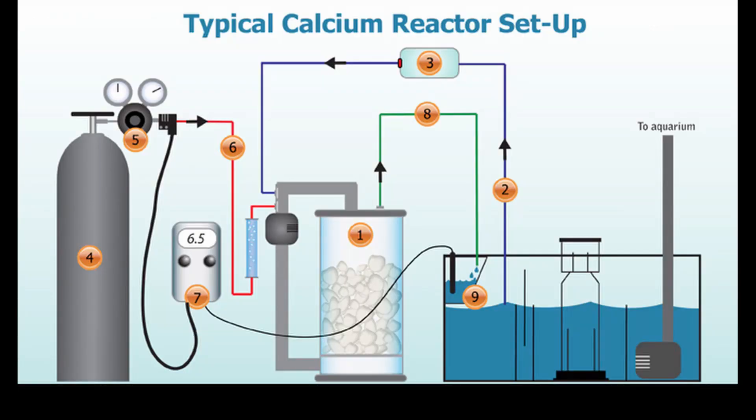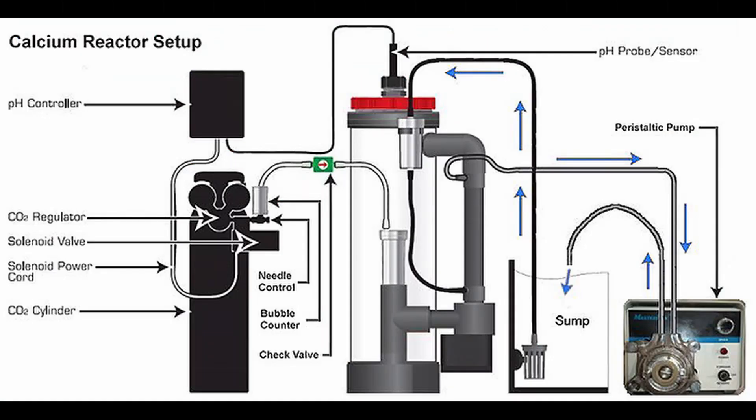A calcium reactor is basically a container where we put media and inject CO2 to lower the pH and dissolve the media. But if the concept is so simple, why does this process require so much equipment?